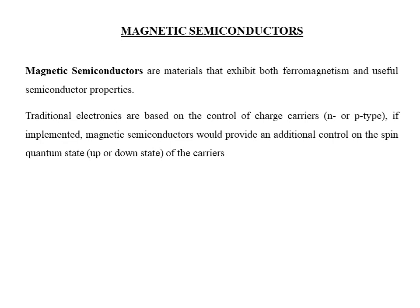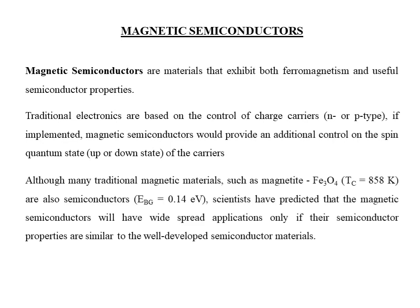You may wonder, can a magnetic property and a semiconductor property coexist? In fact, there exist materials where these two properties coexist. A good example is magnetite with the chemical formula Fe3O4. It is a ferrimagnetic material with a Curie temperature of 858K and also a semiconductor material with a band gap of 0.14 eV, making it most likely a semi-metal.